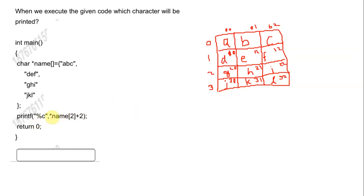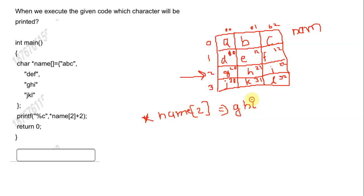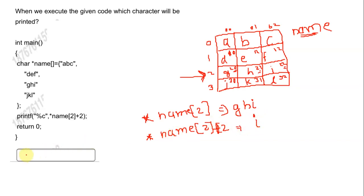We are trying to access the value at index two plus two. The index 2 from the name array is 'ghi'. If we simply write *(name+2), it displays the entire string 'ghi'. But with *(name+2)+2, we go to index 2 of name array and then access character at index 2. Index 0 is 'g', index 1 is 'h', index 2 is 'i'. So this gives the output as 'i'.